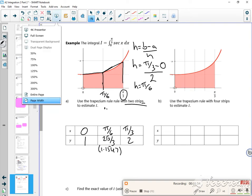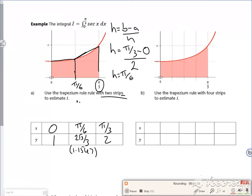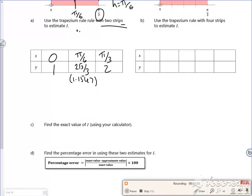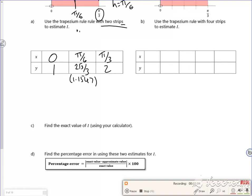In terms of the formula, this is the first y value, this is the last y value, and this value here will be the rest. So the formula is the width over 2, first plus last plus 2 times the rest.